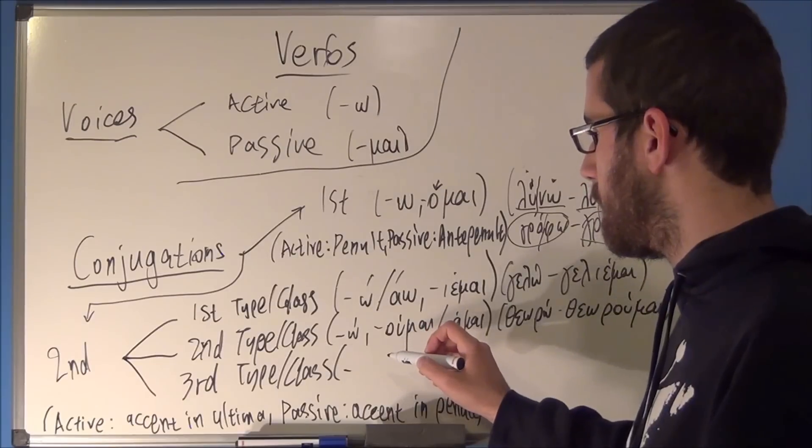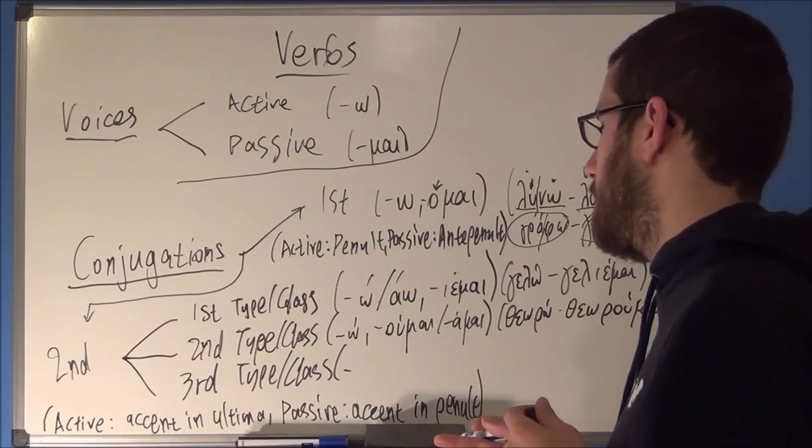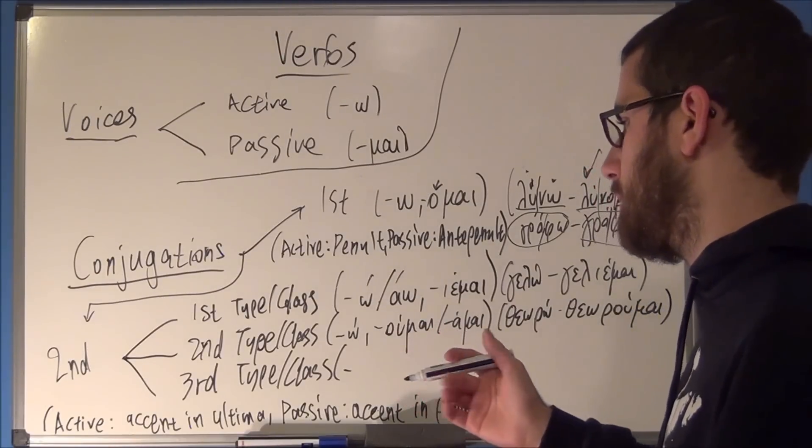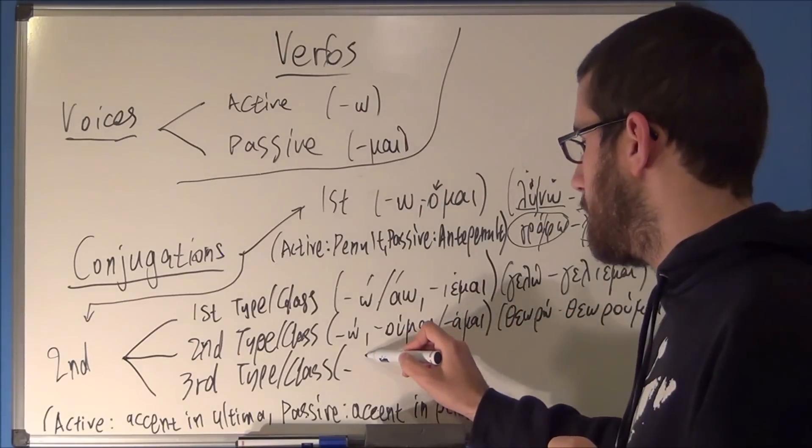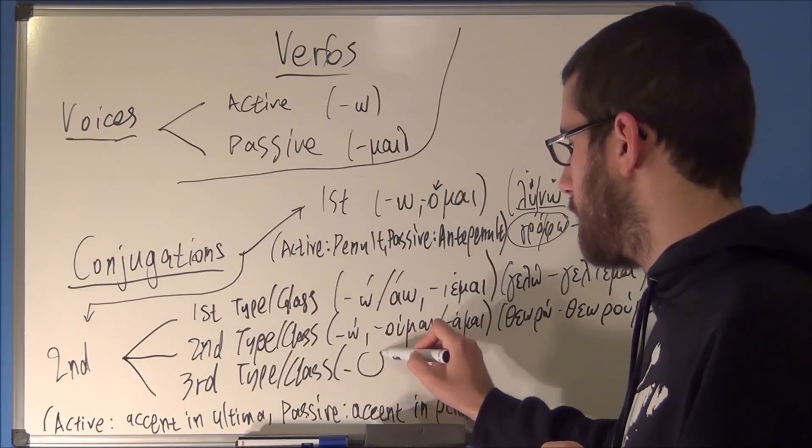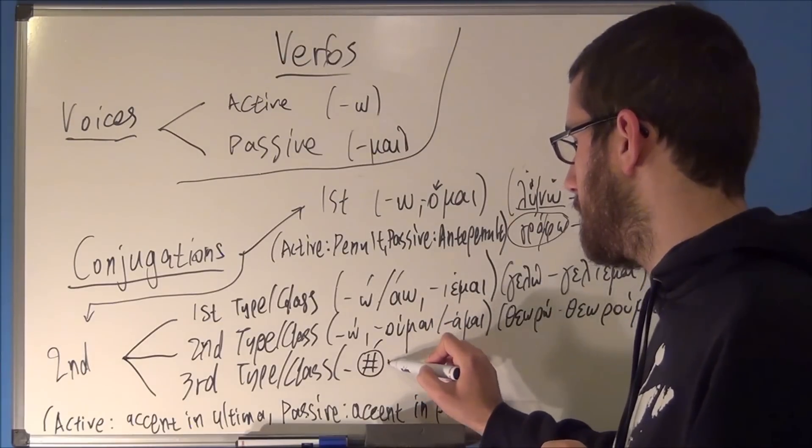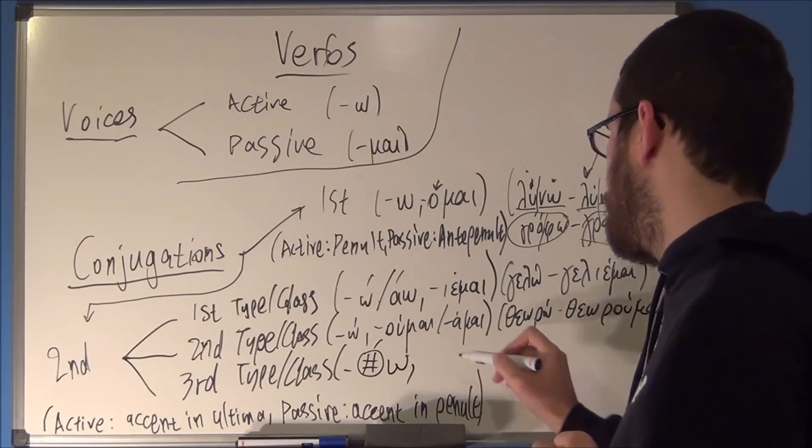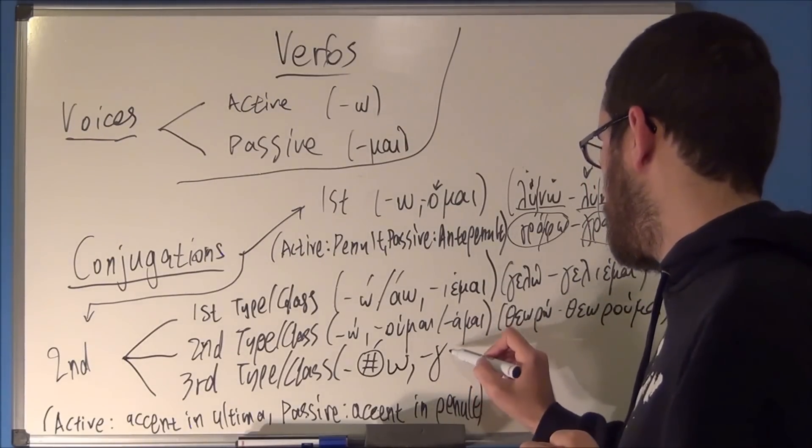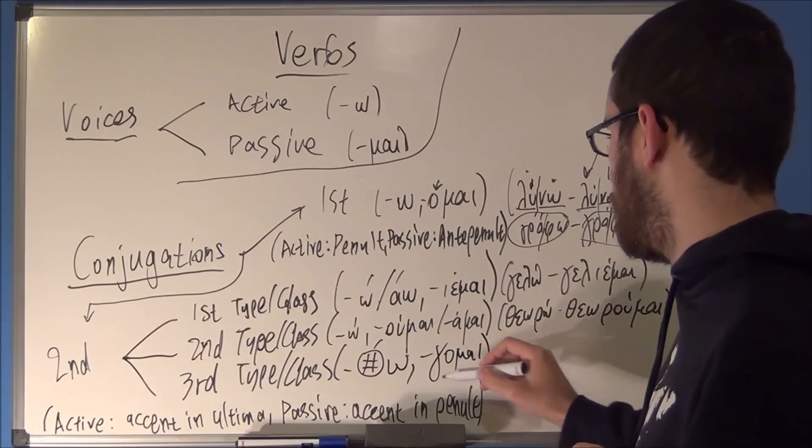And here, this is like the most complex. That's what I said before. As in, it's like an exception of the first class. Of the first class, sorry. You have, let's label this with a hashtag. A verb with an accent on ultima. And in passive voice, you have omai.